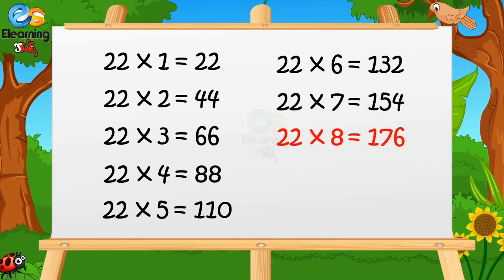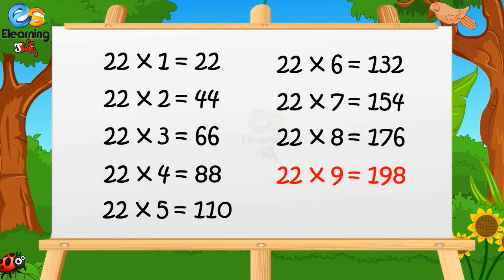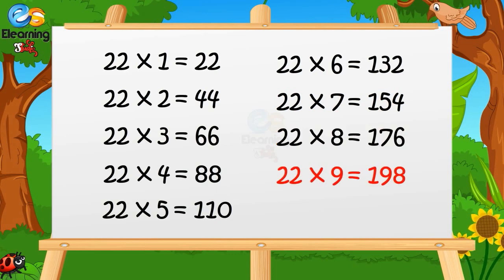22 × 8 is 176. 22 × 8 is 176. 22 × 9 is 198. 22 × 9 is 198.